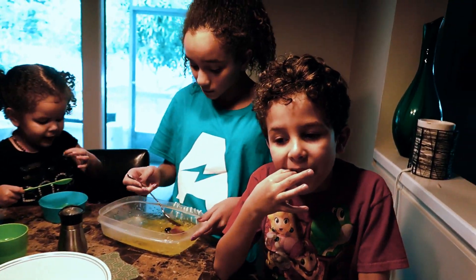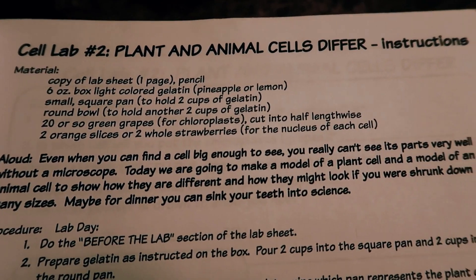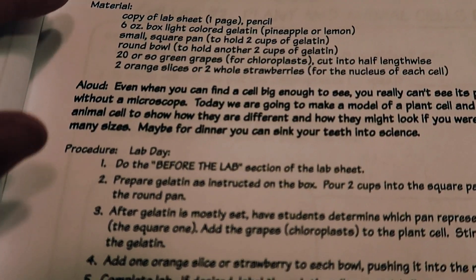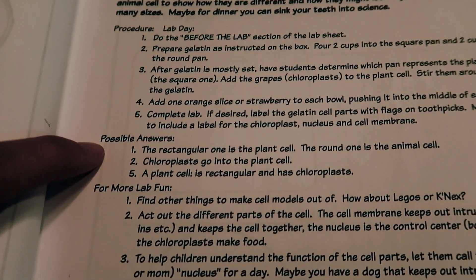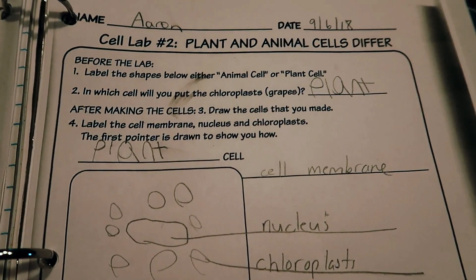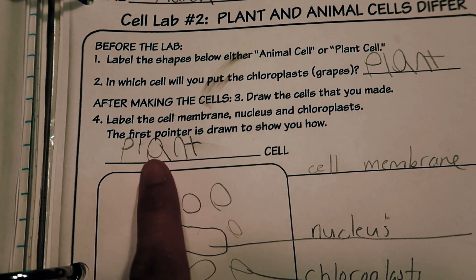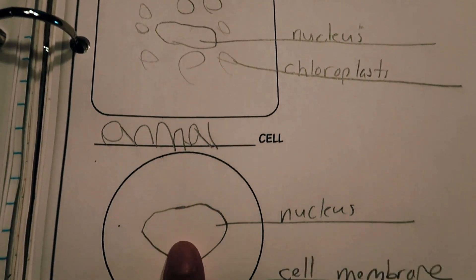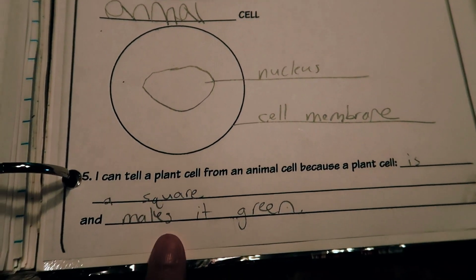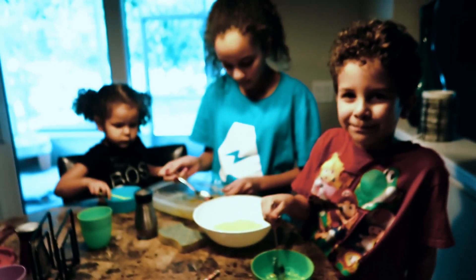And when the nucleus, who's daddy, tells you guys to do something, you're going to listen, right? Did you guys enjoy this lesson? This is from Real Science Odyssey Life, Level One, grades one through four — it's our cell number two lab: plant and animals differ. It tells you the materials, what to say, the procedure for lab day, possible answers, more lab fun which is what we did. And these are the questions that Aaron had to answer, and his drawings of what the cells look like. I labeled it for him because Aaron writes really big. Good job guys!